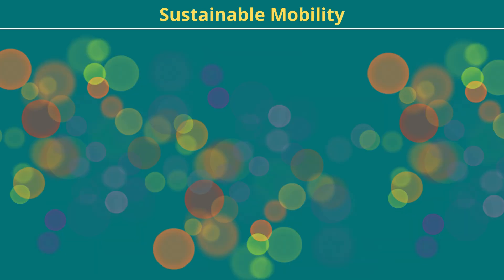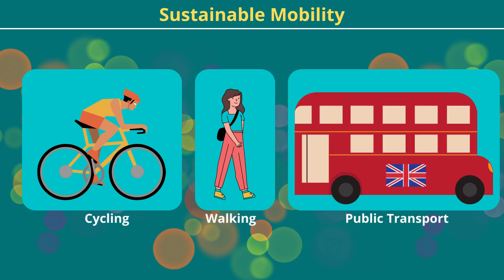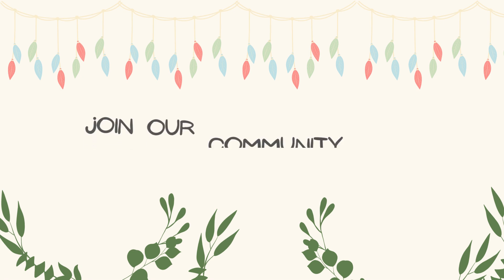Modern cities are also built to encourage sustainable mobility options such as cycling, walking, and public transport. This is achieved by carefully planning the location of essential services and businesses, making sure that sustainable mobility options are available other than using a private car. Those are just a few examples of how sustainable urban design can help to improve the sustainability of our cities and towns.